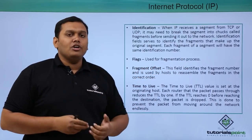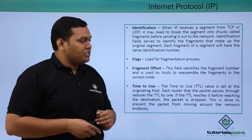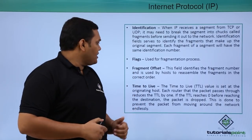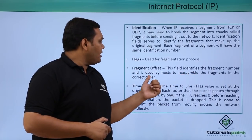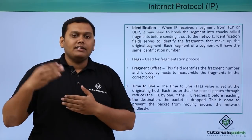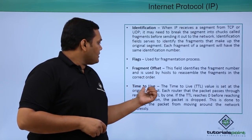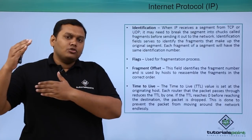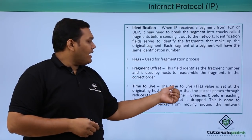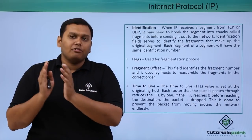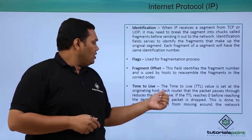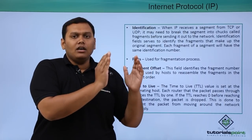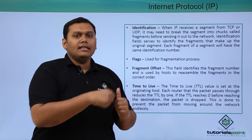Flags are used in the fragmentation process — fragmenting each segment and providing separate field details so it can be forwarded to the destination. The fragment offset field defines the fragment number and is used by the destination host to reassemble fragments in the correct order. The TTL (Time to Live) value is set at the originating host and decremented at each router hop until the packet reaches its destination.